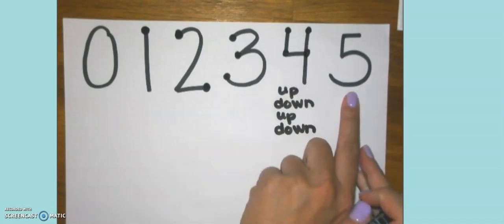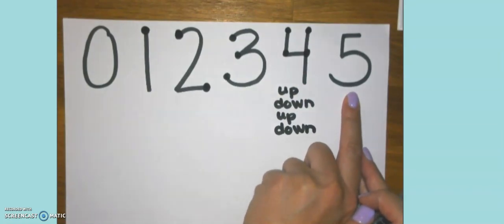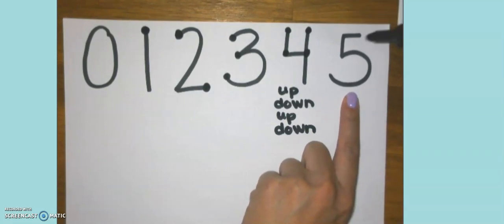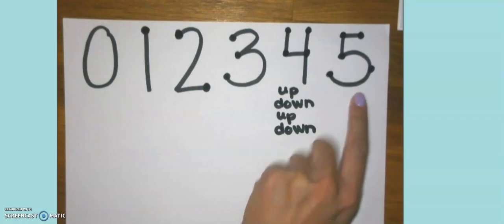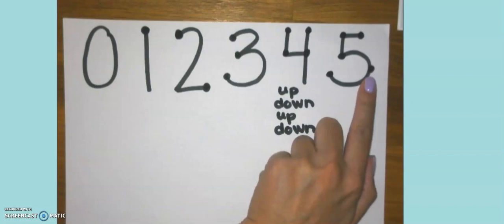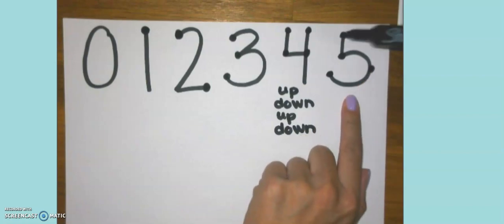And last for today is number five. Number five is one of my personal favorite numbers for touch points because number five has a belly button. Here we go. Let's take a look. We start up here. One, two, three. Here comes the belly button. Four, five. Five is the only number with a belly button. So this one students usually like to do. One, two, three, four, five.